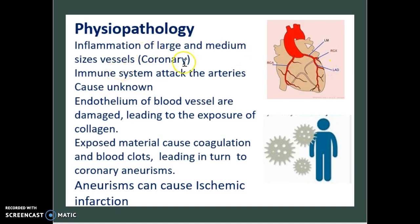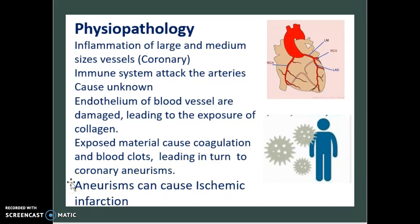When it comes to the physiopathology, there is an inflammation of the large and medium-sized vessels — specifically the coronary vessels. The immune system attacks the arteries, and the cause for this is unknown. However, the endothelium of blood vessels is damaged, leading to exposure of the collagen. This exposed material causes coagulation and blood clots, which leads to coronary aneurysms. It's important to note that aneurysms can cause ischemic infarctions.